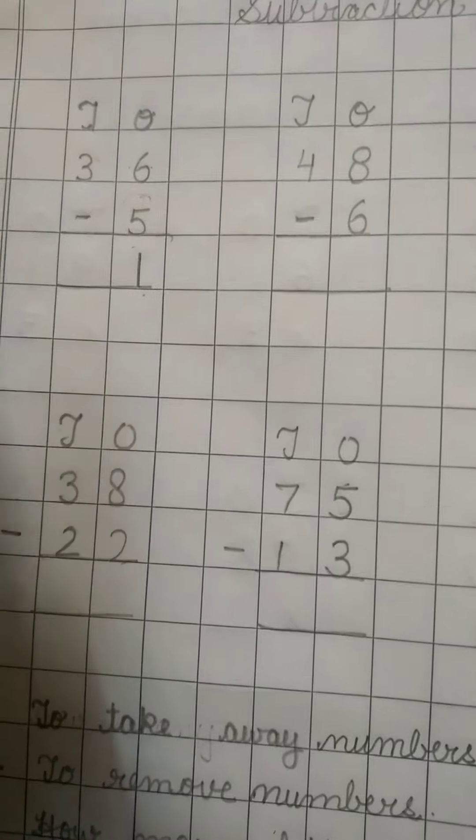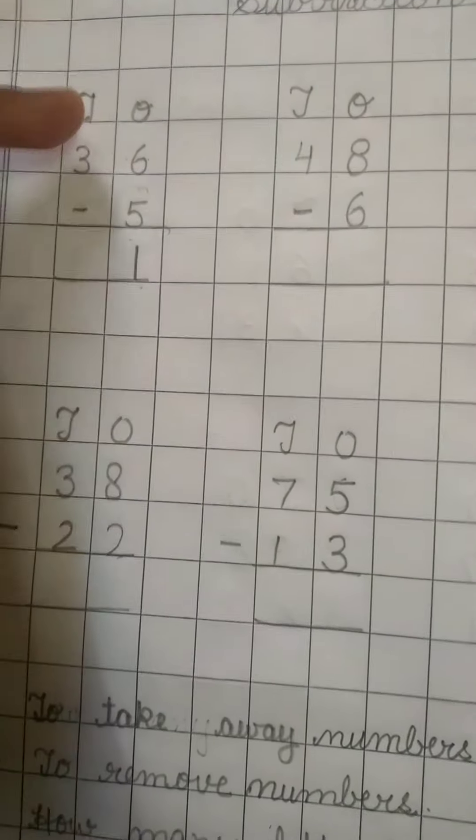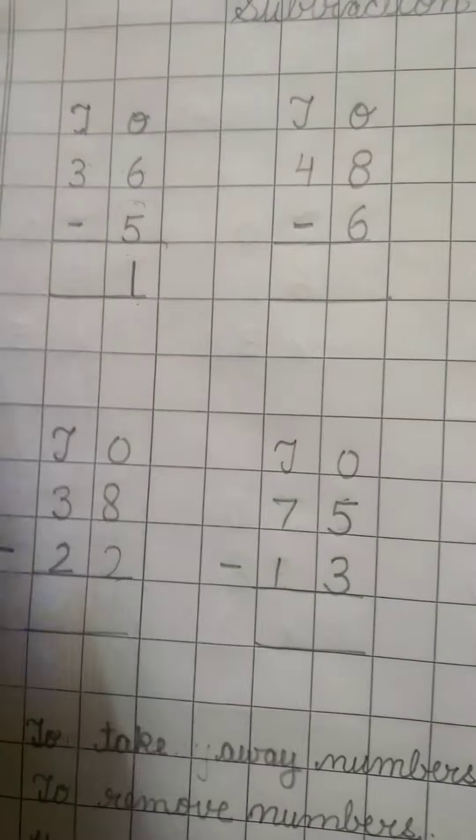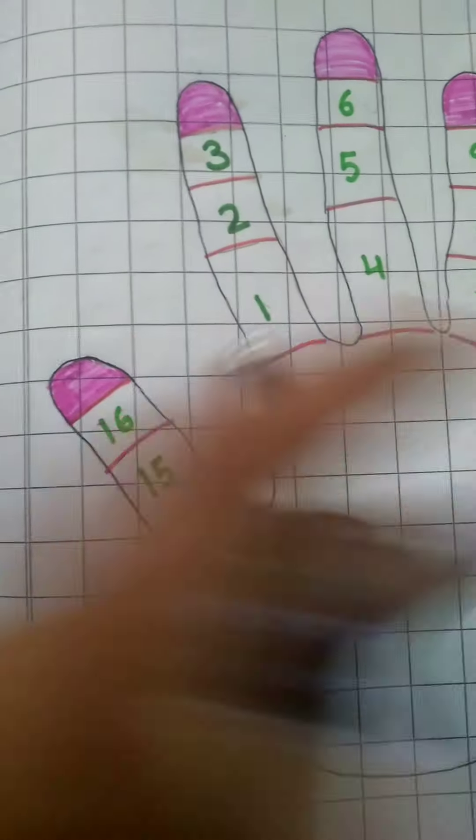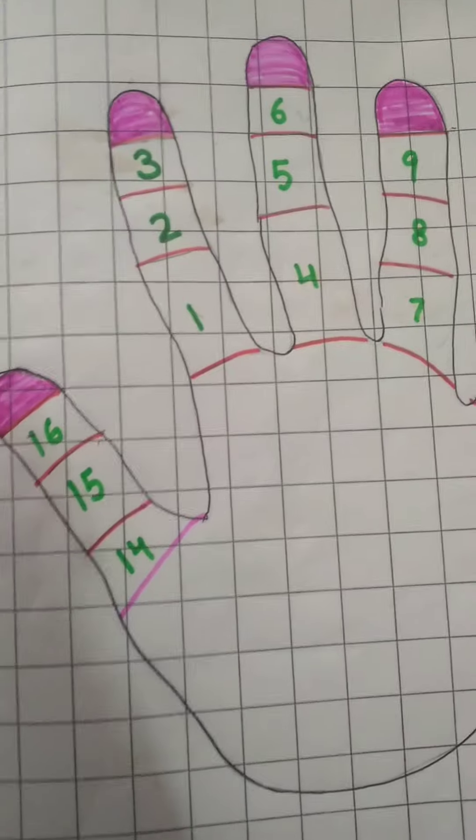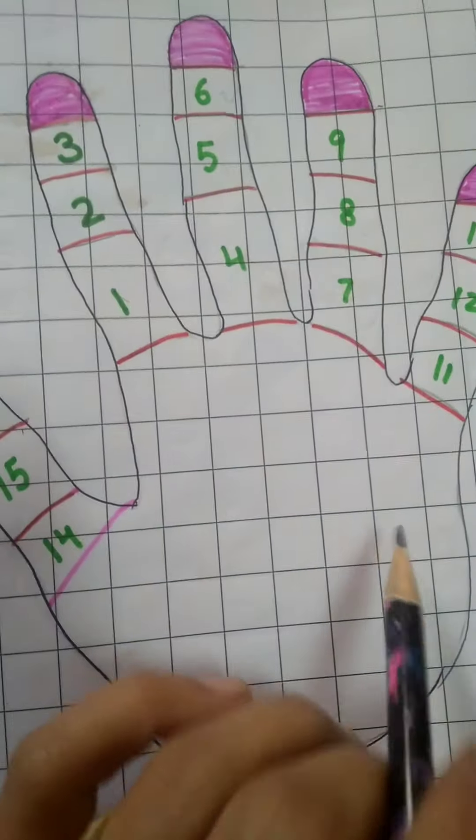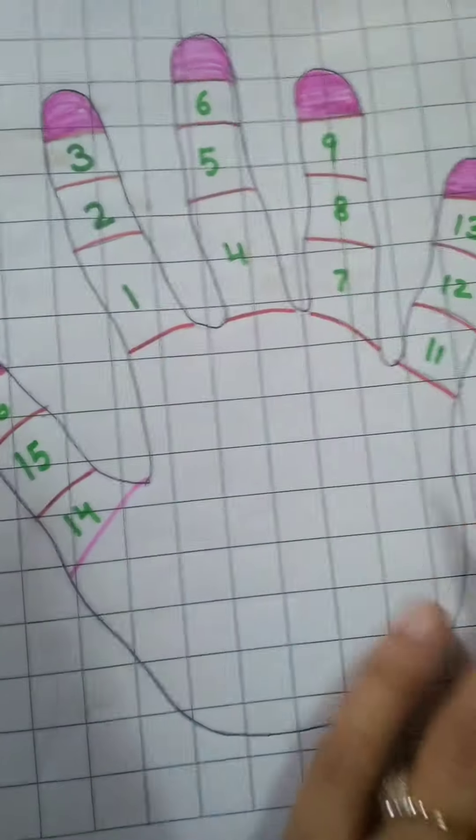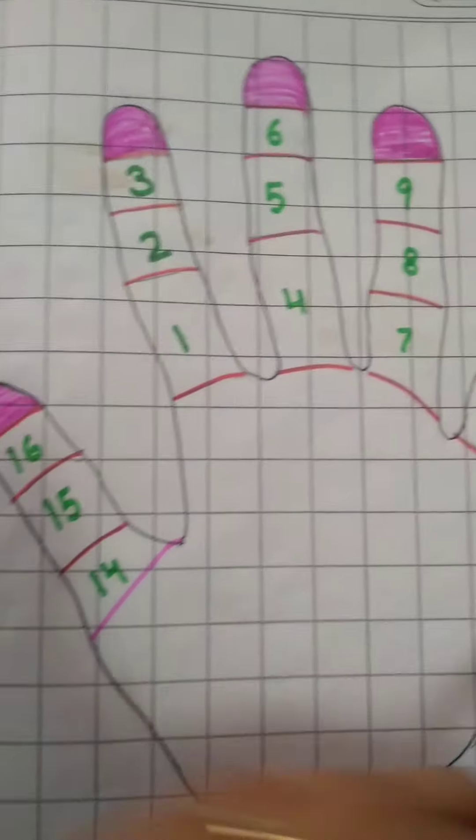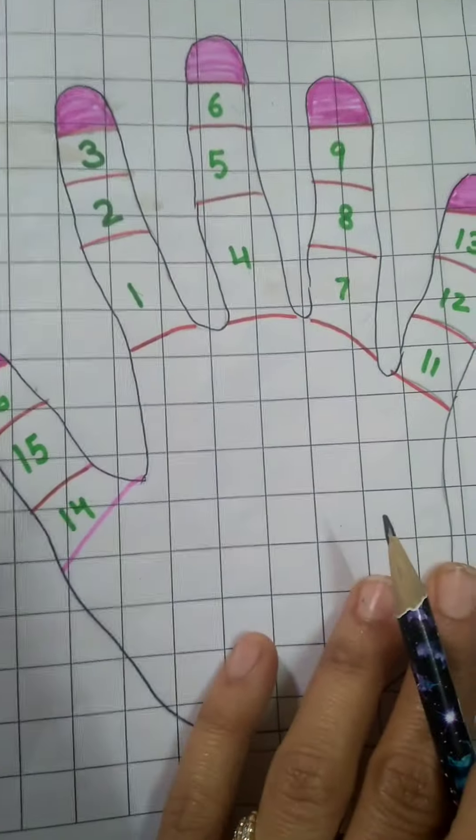How to recognize how many is remaining. In subtraction we do the complete exercise on our fingers. In addition we use mind and fingers, but in subtraction we will use only our fingers. This is the magic of fingers. You have to draw a hand, as I have drawn here.